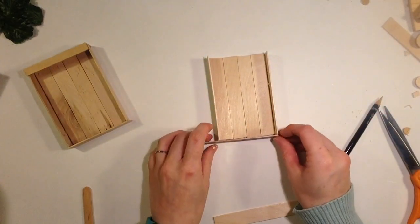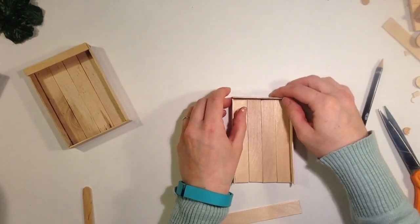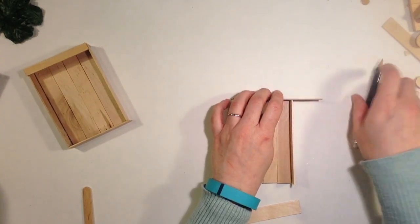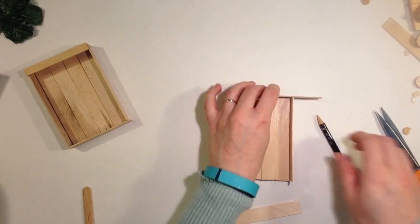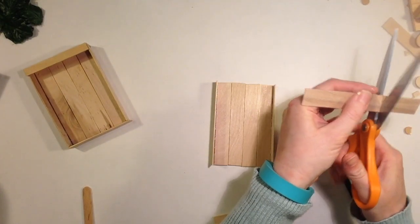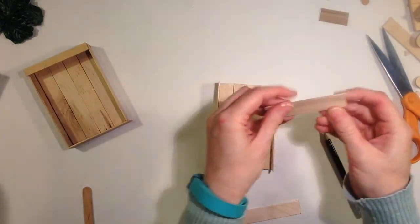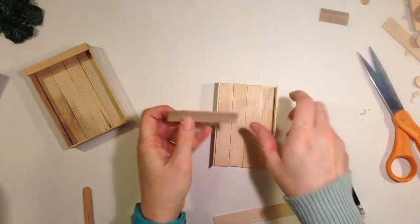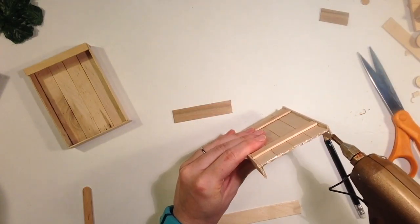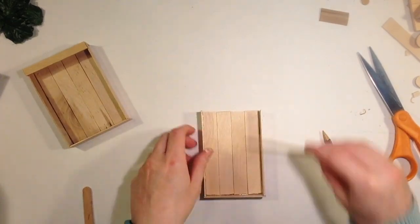Now I will take two more jumbo sticks, cut one round end off, measure the length and cut it to size, then glue it in place. Repeat this for the other end.